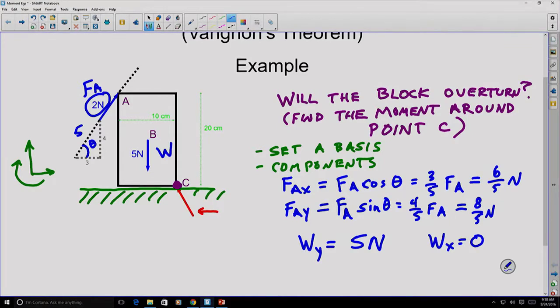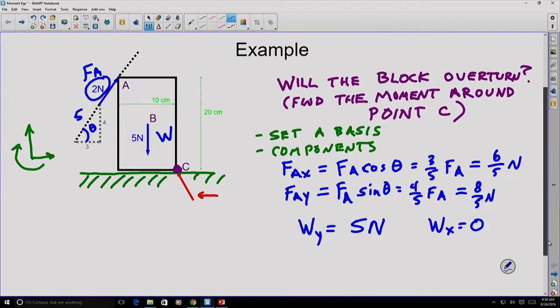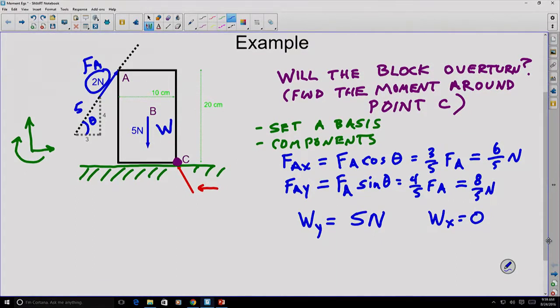So now we want to know what the moments are around point C. Let's do the moments of the weight around point C. That's what I'll use the W and the C for, the moment of the weight around point C. In that particular case, that's going to be equal to the value of the force, which is the weight, times the moment arm. Well, what is the moment arm here? In this case...